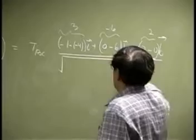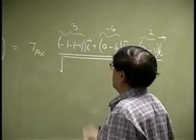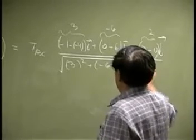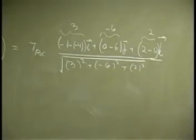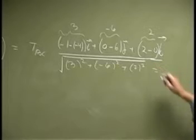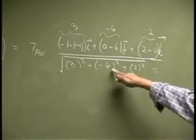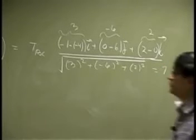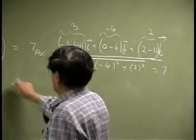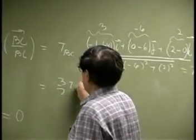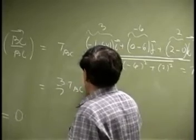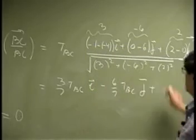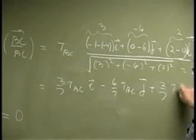Which means the length will come out to be 3 squared, negative 6 squared, and 2 squared. The bottom is 9, 36 is 45, there will be 7. So the force will be 3 sevenths TBC I, negative 6 sevenths TBC J, 2 sevenths TBC K.